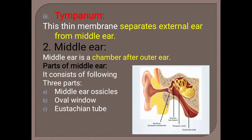The tympanum or eardrum is the thin membrane that separates the external ear from the middle ear. The second part of the ear is the middle ear — it is the chamber after the outer ear. The parts of the middle ear are: the middle ear ossicles, the oval window, and the Eustachian tube.